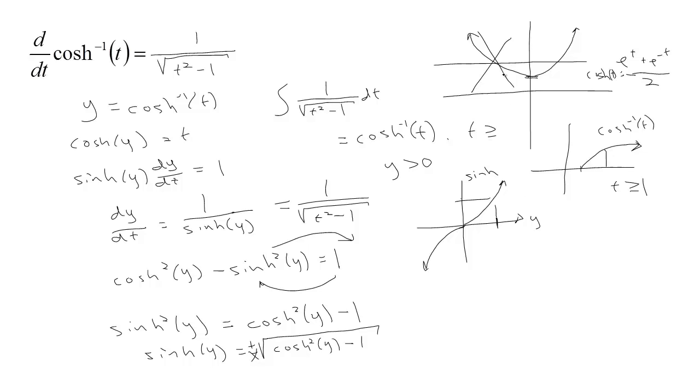It only works, we cut off this part and it only works if t is greater than or equal to 1 because the outputs of cosh have to be greater than or equal to 1. Okay, in fact, 1 over the square root of t squared minus 1 doesn't exist at 1, so I'll have to leave that off.